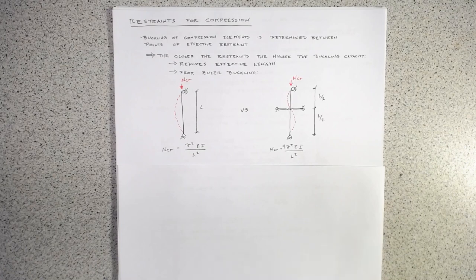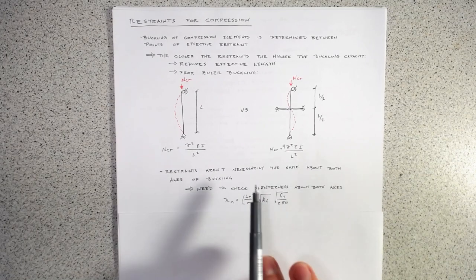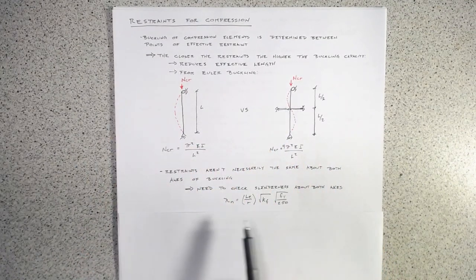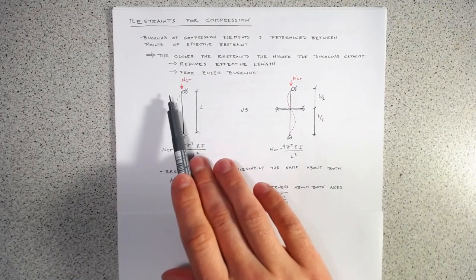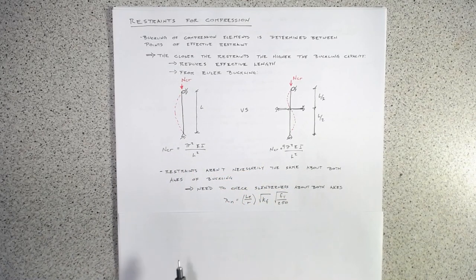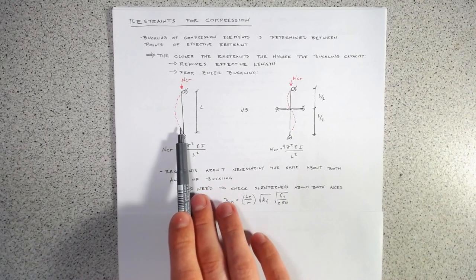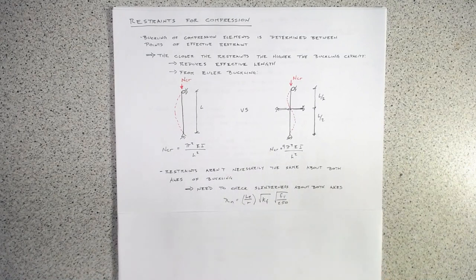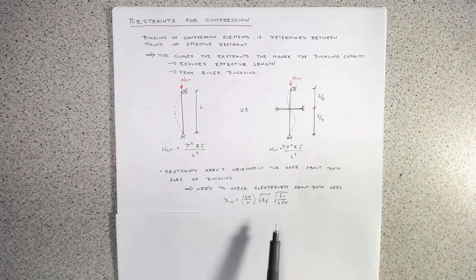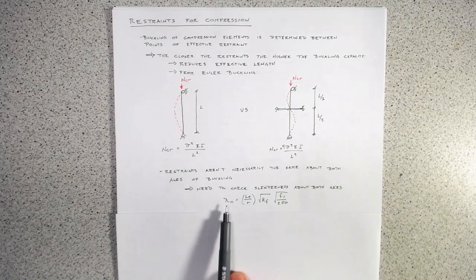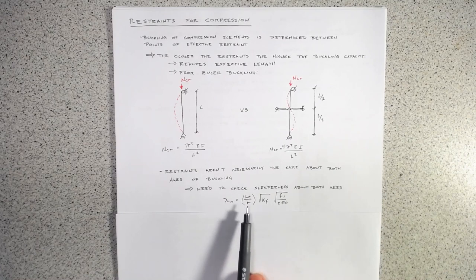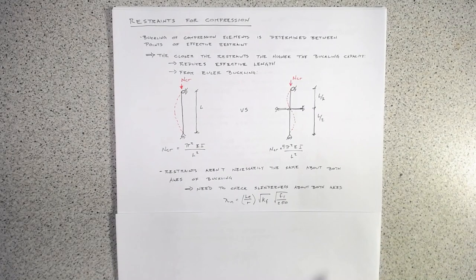Restraints aren't necessarily the same about both axes. For example, you could have buckling with an unrestrained length L for the strong axis of an I-section, and a restraint at mid-height about the weak axis, balancing the critical buckling loads about each axis. It's important to check the slenderness limit — which depends on the effective length and radius of gyration — for both axes, since LE may differ about two different directions.